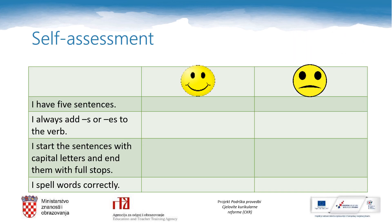This is your checklist. Your checklist will help you do the task successfully. It says: I have five sentences. I always add S or ES to the verb. I start the sentences with capital letters and end them with full stops. I spell words correctly. Use the checklist while writing to make sure you do everything properly.